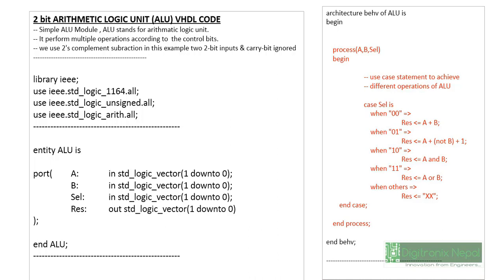The 2-bit ALU can be scripted in VHDL as follows. We need the standard libraries, plus two extra libraries: `IEEE.std_logic_unsigned.all` and `IEEE.std_logic_arith.all`. These two extra libraries are needed for performing operations like A plus B or A minus B. The arithmetic operators discussed previously in VHDL data types are utilized here. We need the unsigned and arithmetic libraries for performing these operations.